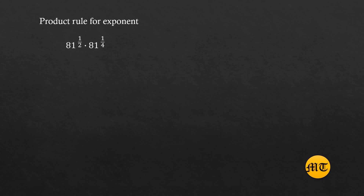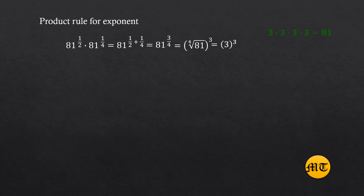Let us have an example involving operations to apply exponential rules. Product rule for exponents: eighty-one raised to one-half multiplied by eighty-one raised to one-fourth. Since the base is similar, copy eighty-one and add the exponents: one-half plus one-fourth equals three-fourths. So we have eighty-one raised to three-fourths. Transform to radical form: the fourth root of eighty-one, raised to three. The fourth root of eighty-one equals three, since three times three times three times three equals eighty-one. Therefore, three raised to three equals twenty-seven. In short, for the product rule, if the operation is multiplication, the exponents are added.